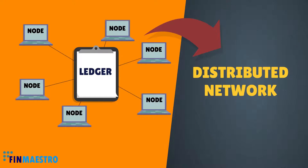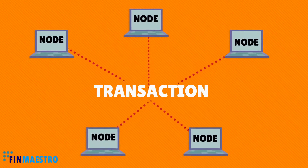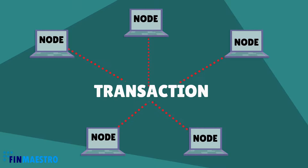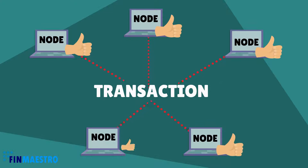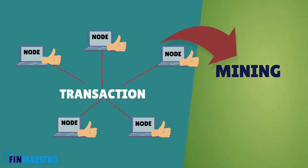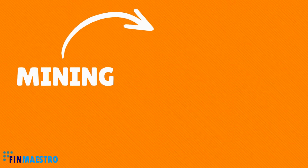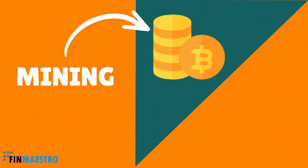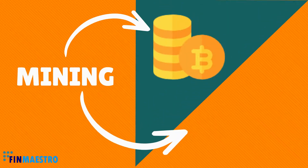When a transaction happens between two parties, this information is broadcasted to all the nodes available in the network. All the nodes in the network need to approve this transaction for the purpose of entering it in the ledger. This process is called mining.